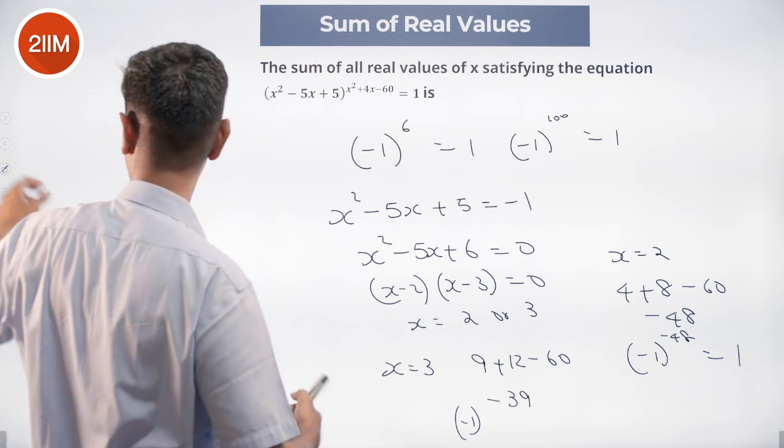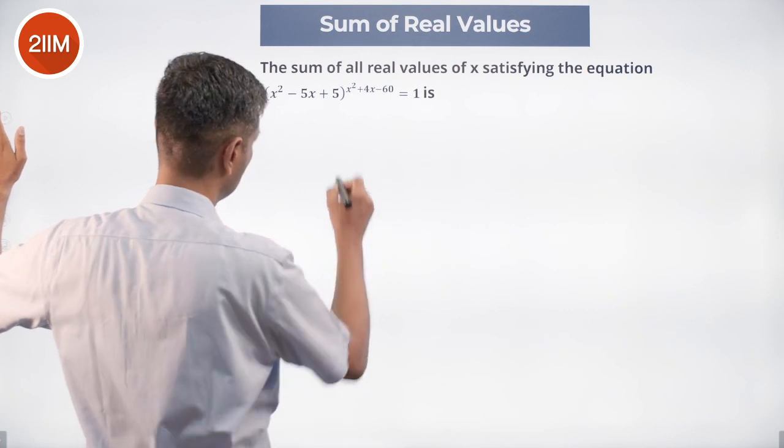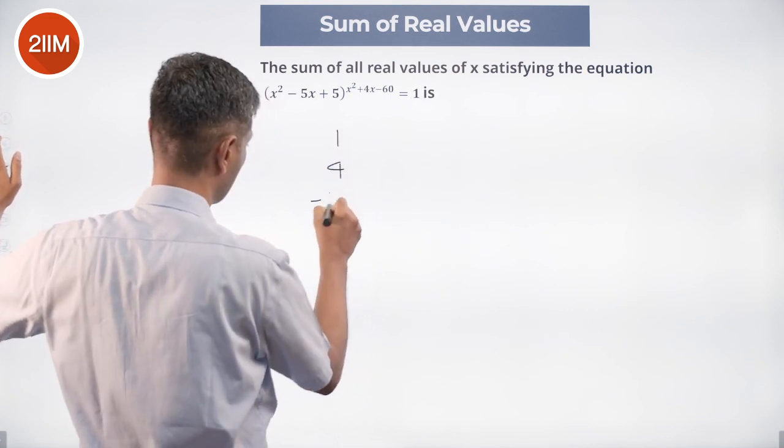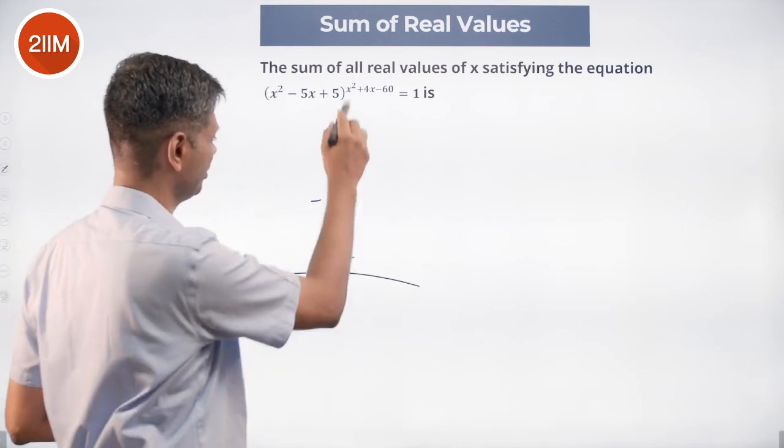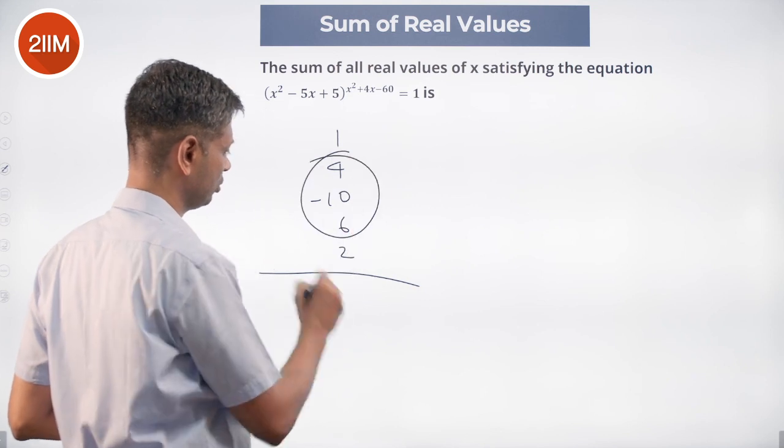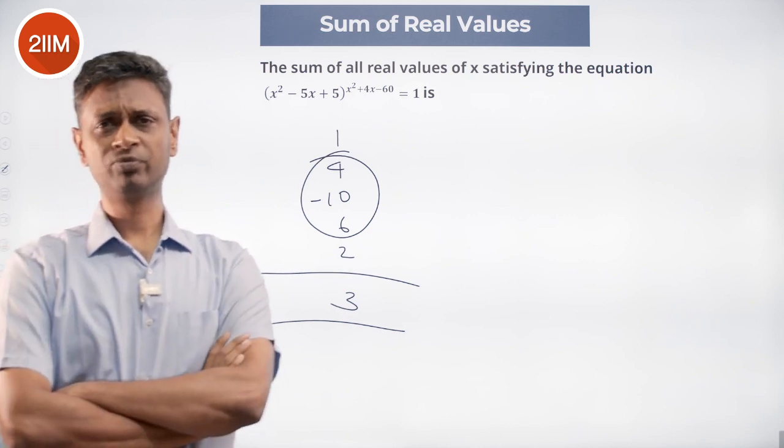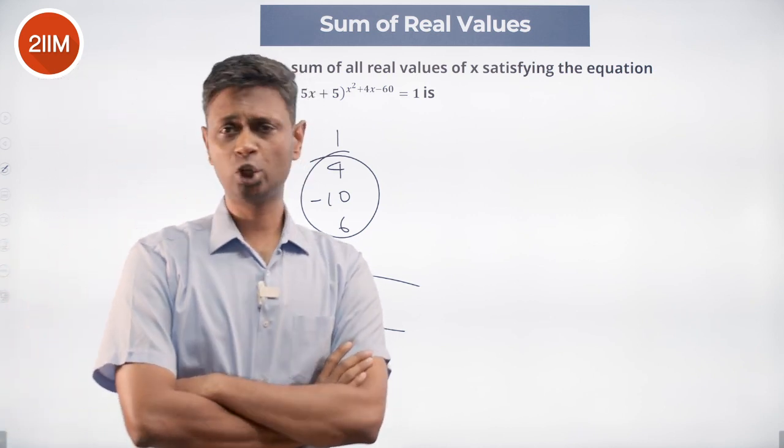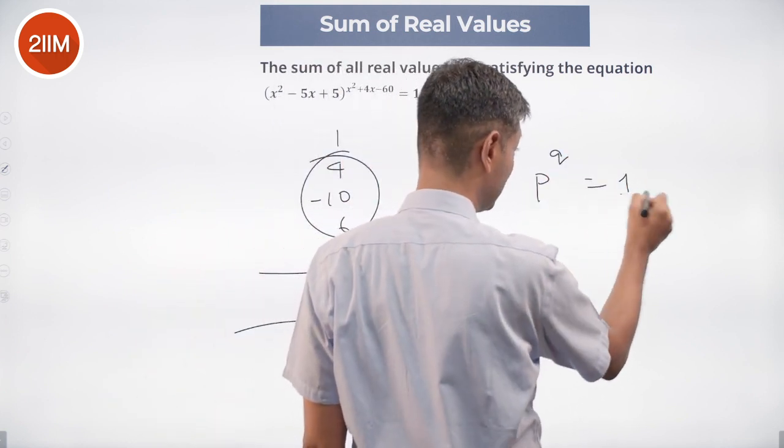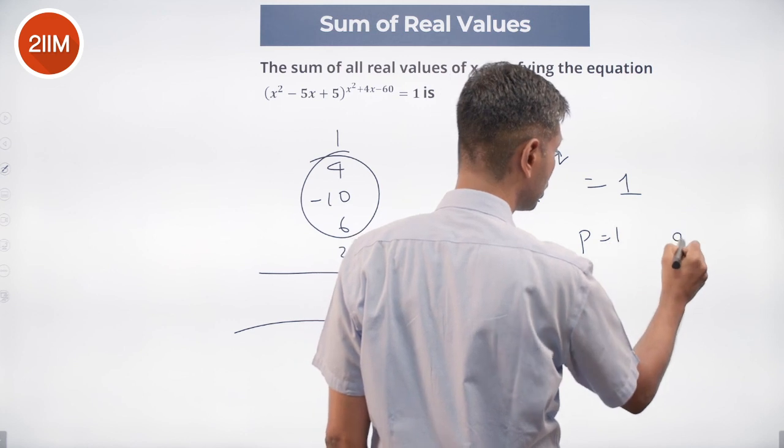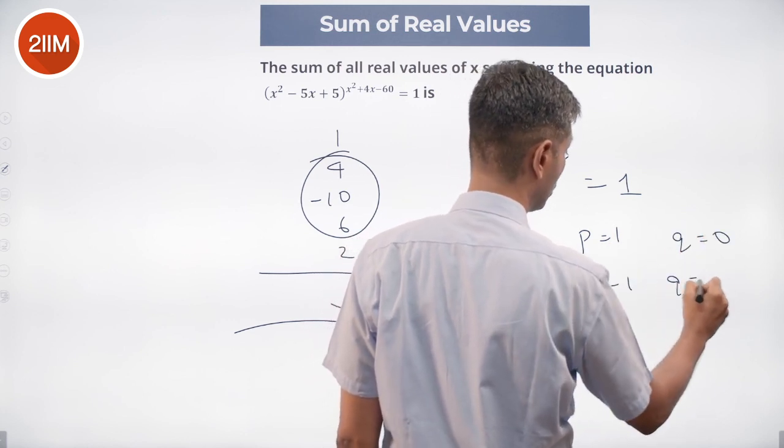Now we take all the possible values of x: 1 or 4, minus 10, 6, 2, add all of this up. 6 + 4 is 10, this goes to 1 + 2, this whole thing goes to 0, 1 + 2 is 3. All possible values adding up to 3, that is the sum of all possible values. If p power q is 1, we are solving for p = 1, q = 0, and p = -1, q is equal to even number.